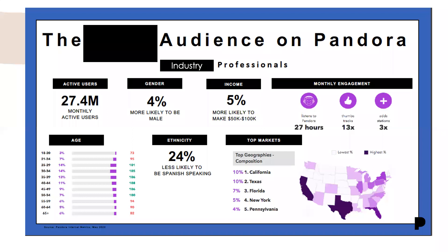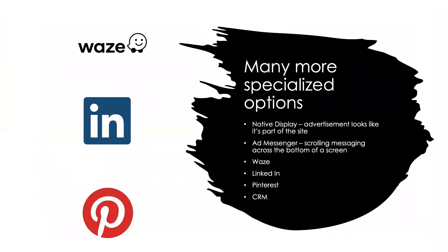Here's an example of a national campaign we ran for that insurance agent example. We were able to see where to focus our dollars on Pandora by geographic location — we put money in California and Texas because they had the highest rate of insurance professionals. Your digital providers will have this kind of data for you, and we'll talk more about that when we get to the slide on how to find digital providers.